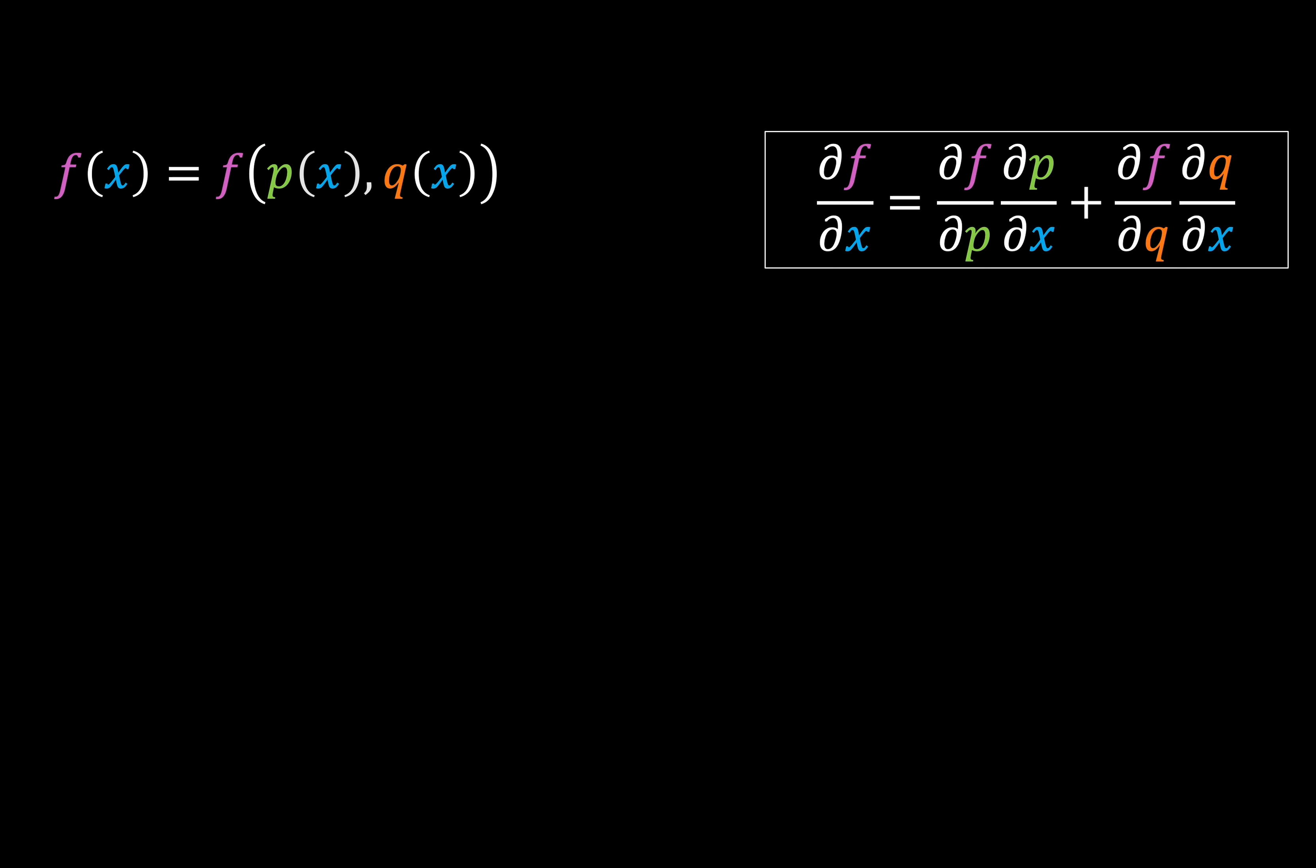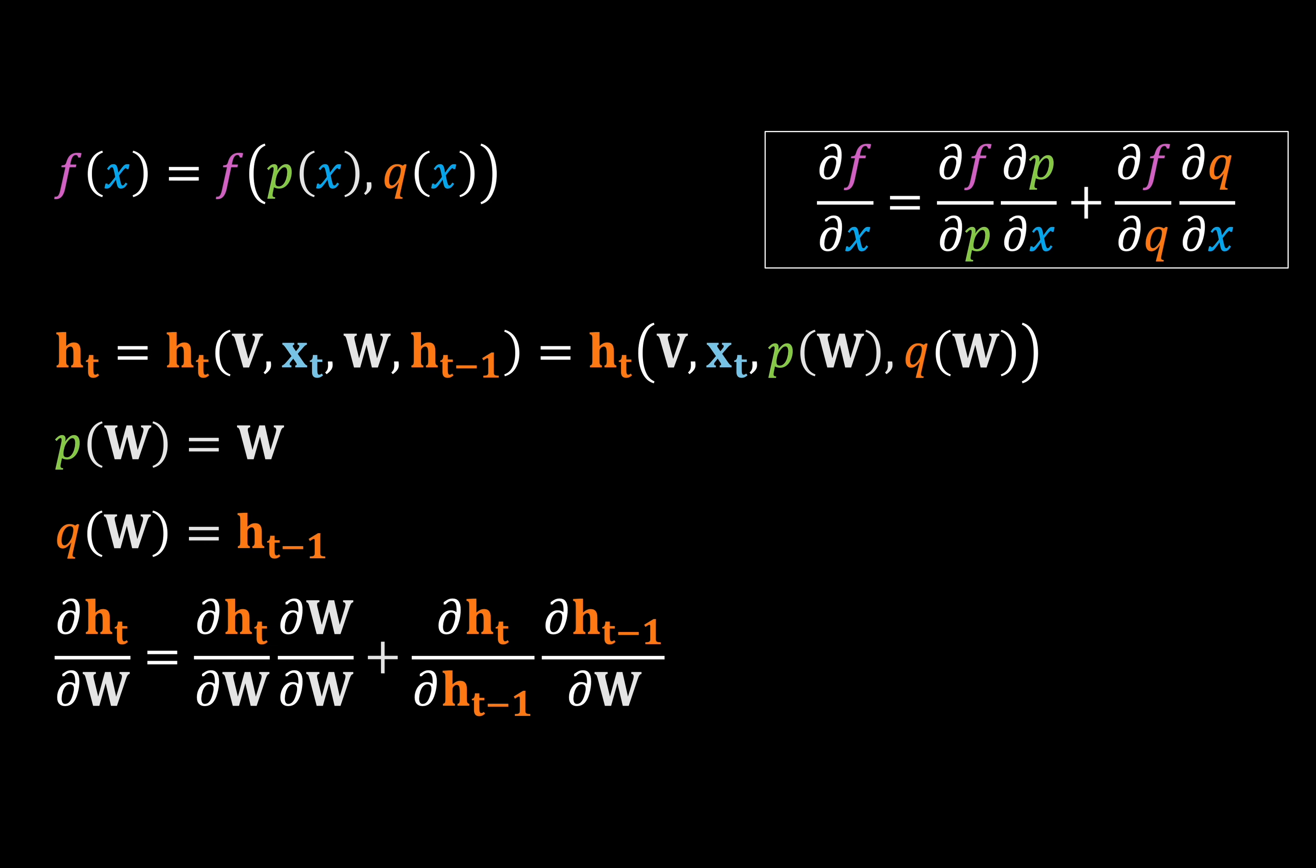First, we start off with a partial derivative chain rule, which we use to find the derivative of some function F, which is itself a function of sub-functions P and Q. To fit this into our context, we can say that H of T is a function of two functions P and Q, where P is equal to W itself, and Q is equal to H of T minus 1. So now we can differentiate and just cancel out this term because it's equal to 1.